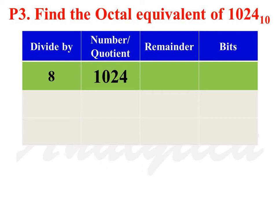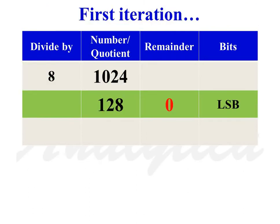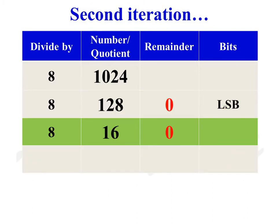Third problem: find the octal equivalent of 1024. During the first iteration, divide 1024 by 8; we will get 128 as the quotient and 0 as the remainder. As quotient is not equal to 0, we continue for a second time. During the second iteration, we will get 16 as the quotient and 0 as the remainder. As quotient is not equal to 0, we continue for a third time.